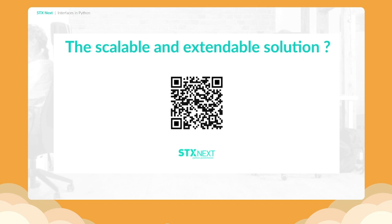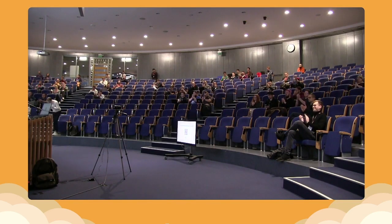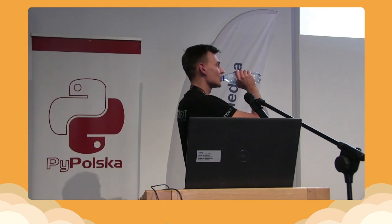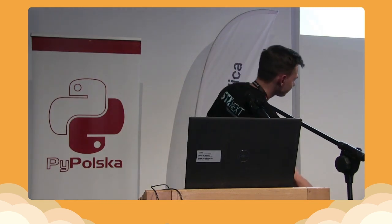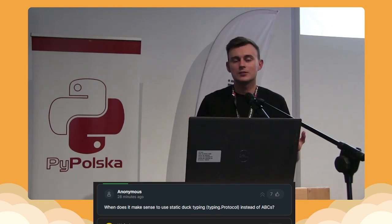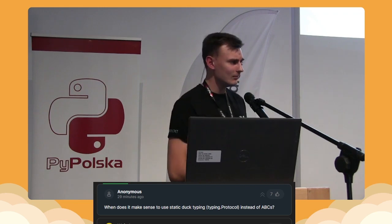If you use this QR code, you'll find the link to my GitHub repo with all code examples and diagrams. Now for questions. First: when does it make sense to use static duck typing instead of ABCs? For me, ABCs are clearer when you have classes — but it's mostly a matter of taste. Under the hood they're probably doing the same thing. We can discuss further after the presentation.